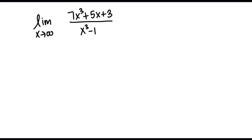Let's take a look at this limit together: the limit as x goes to infinity of 7x cubed plus 5x plus 3, all over x cubed minus 1. This is what we call a rational function — I have a polynomial on top and a polynomial on bottom. Looking at the limit as x goes to infinity provides us with information about the behavior of this rational function on its ends, or what we might call end behavior.